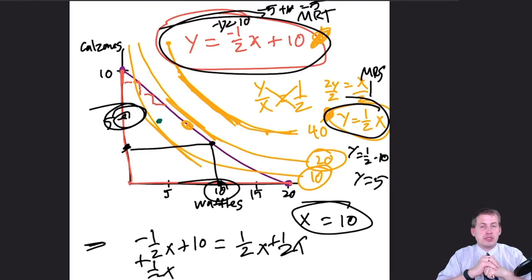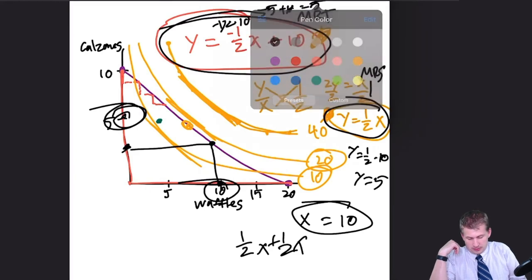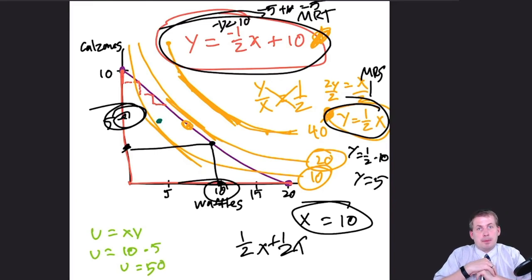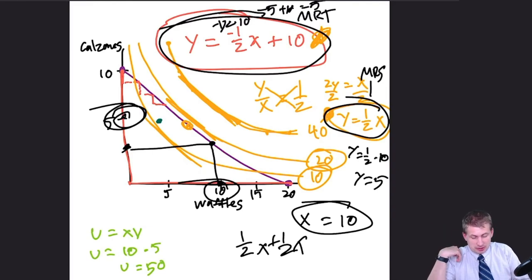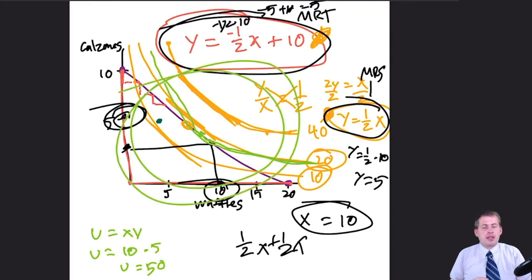That combination maximizes our happiness given the budget constraint. We can calculate the actual utils: u equals x times y equals 10 times 5 equals 50 utils. These are relative numbers — my 50 utils aren't the same as yours — but what this means is the 50-util indifference curve is tangent to our budget line at the point 10 waffles and 5 calzones.